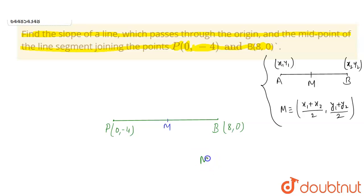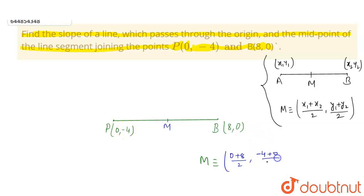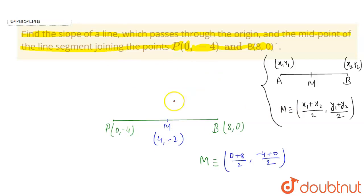So the midpoint M of PB will be: M = ((0 + 8)/2, (-4 + 0)/2). This gives us 4 for the x-coordinate and -2 for the y-coordinate. So the midpoint M is (4, -2).